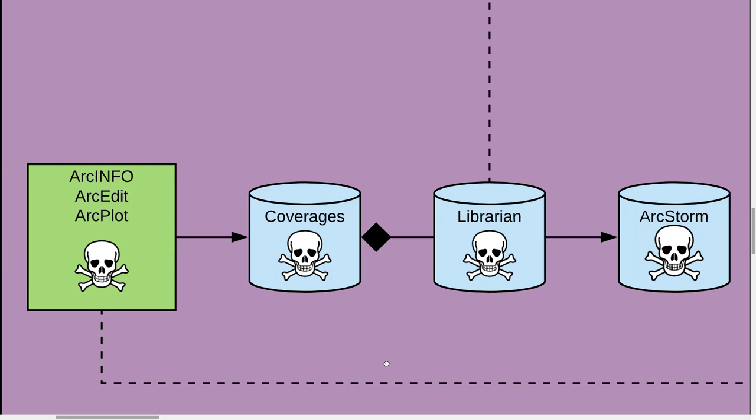A big thing about ArcInfo were coverages, or workspaces with coverages in them. You'd have a workspace, which was a directory, with other directories underneath called coverages and a shared info directory where all the attributes went. Coverages were used to build a data product called Librarian. So if you want all the contours for BC at 1:20,000, it's hard to put it in one coverage. You break it up or tile it across multiple directories as coverages, and also have an index coverage that told you where everything was. A Librarian is just a massive directory of workspaces with coverages inside to give you the ability to have a seamless dataset.